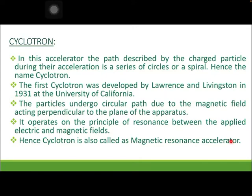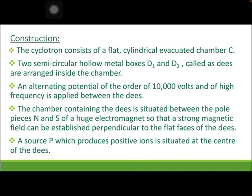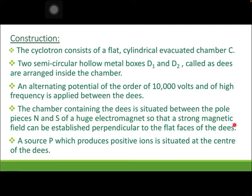The cyclotron consists of a flat cylindrical evacuated chamber C. Two semicircular hollow metal boxes D1 and D2, called Ds, are arranged inside the chamber. An alternating potential of the order of 10,000 volts at high frequency is applied between the Ds. The chamber containing the Ds is situated between the pole pieces N and S of a huge electromagnet, so that a strong magnetic field can be established perpendicular to the flat faces of the Ds. The source P, which produces positive ions, is situated at the center of the Ds.